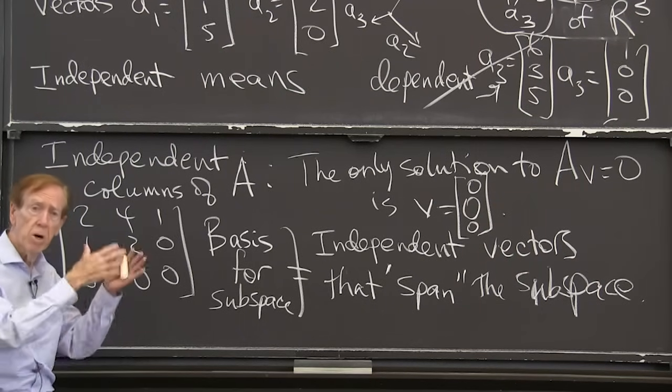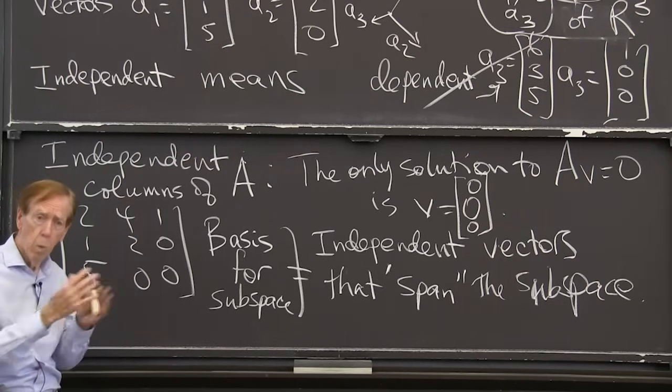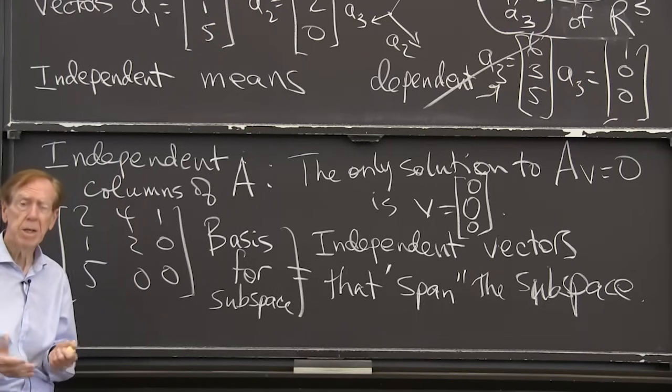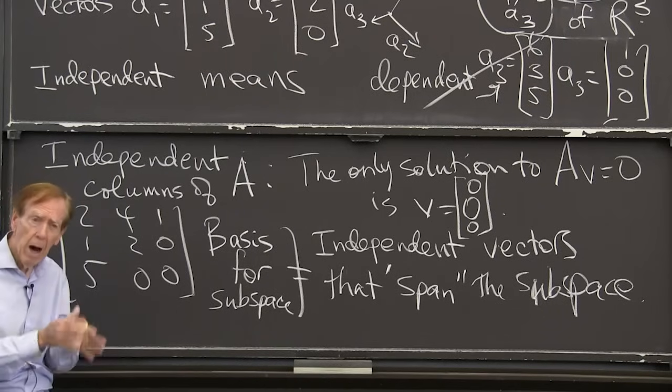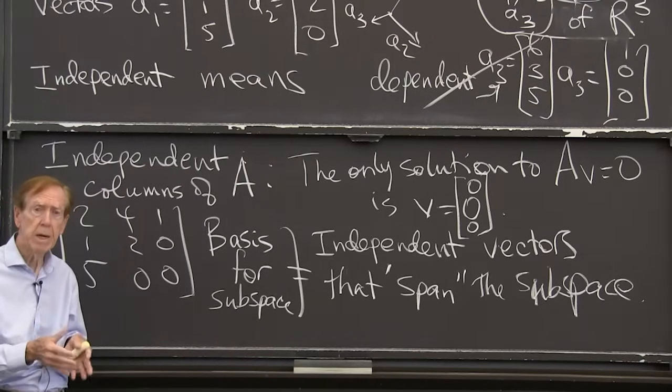And those dimensions are 0, 1, 2, 3. The possible dimensions is told to us by how many basis vectors we need.